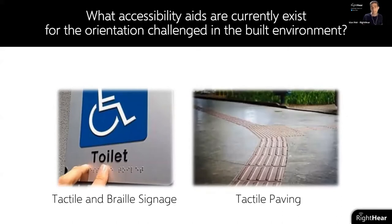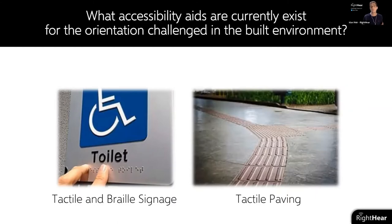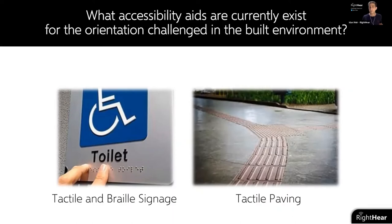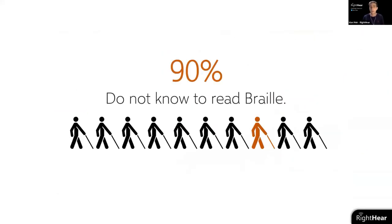What do we have to offer specifically to people who are blind or visually impaired in the built environment? First, we have tactile and braille signage. The problem is you need to know where the sign is to read and touch it, and you may not want to touch a public surface. We also have tactile paving on the floor, which gives a direction but not necessarily a destination. An interesting fact: over 90% of the blind community do not know how to read braille at all.